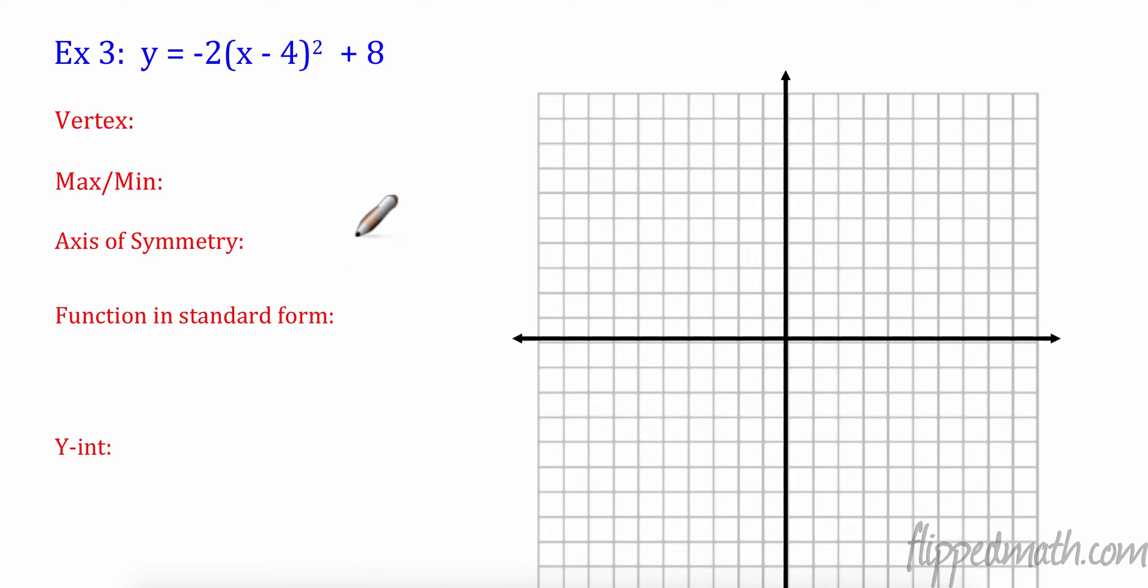Let's try another one. Find our vertex. So we have the opposite of this is 4. Exactly the outside is our Y value. 4, 8, 1, 2, 3, 4. And up 8. 1, 2, 3, 4, 5, 6, 7, 8. Great. All right. Is this our maximum? It's negative, so it's going to open down. So this is going to be a max. Our axis of symmetry is X equals our X coordinate of our vertex. So it's at 4.